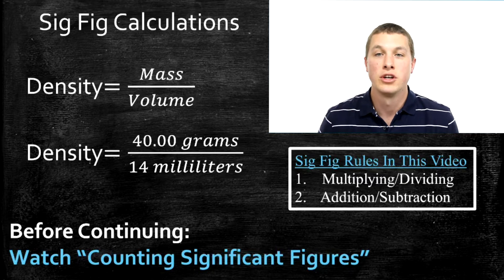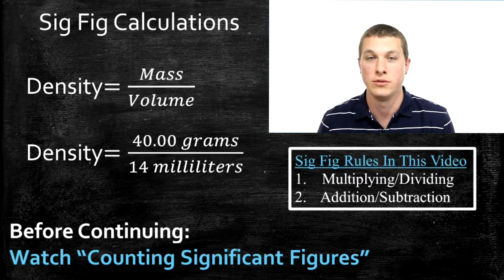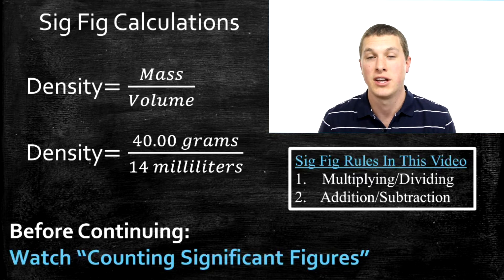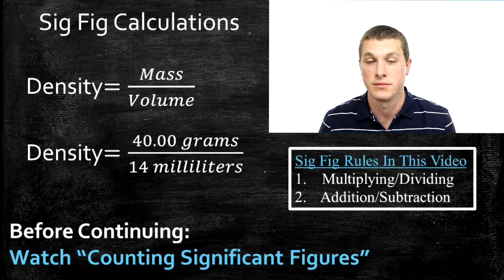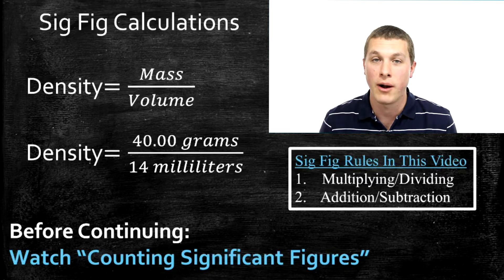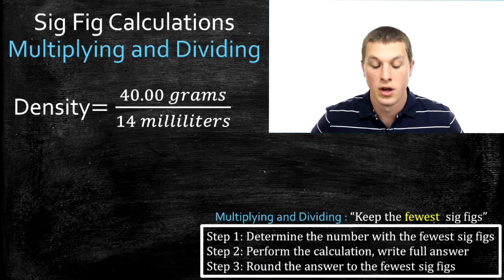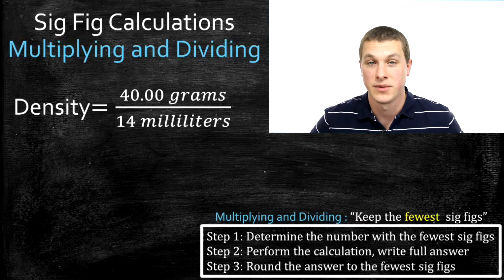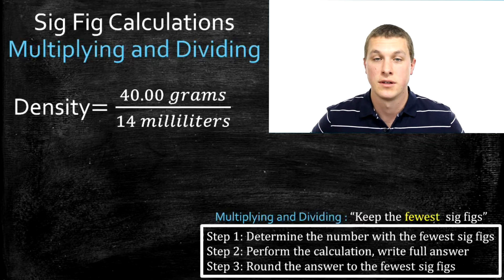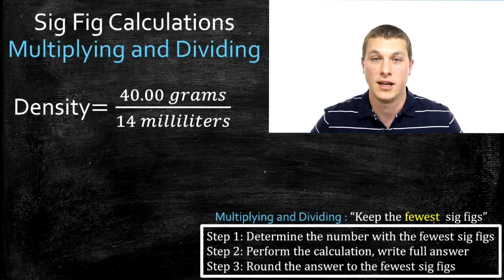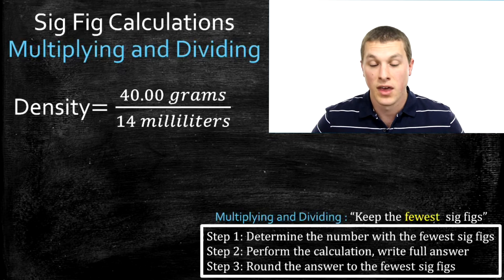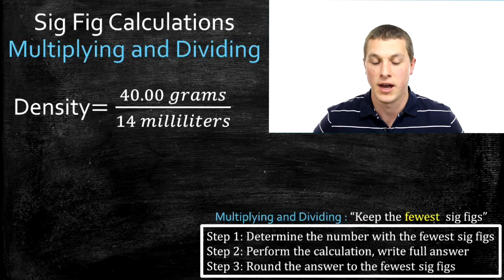We're going to talk about the rules to determine how many significant figures your answer from a calculation should have. First we'll cover multiplication and division. If you're not sure what significant figures are, I recommend you go back and watch my video on counting significant figures before continuing. We've gone into the lab and want to determine the density of some object. The simple rule of thumb for multiplication and division is: keep the fewest sig figs.